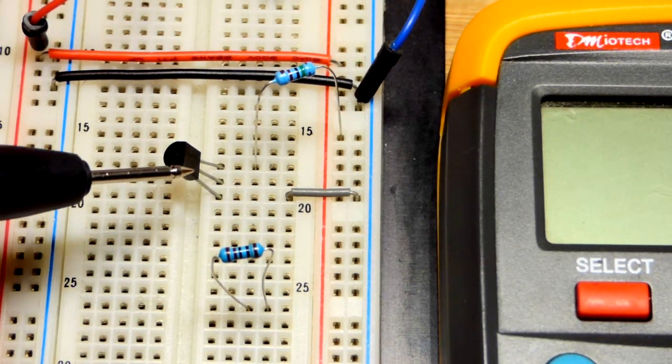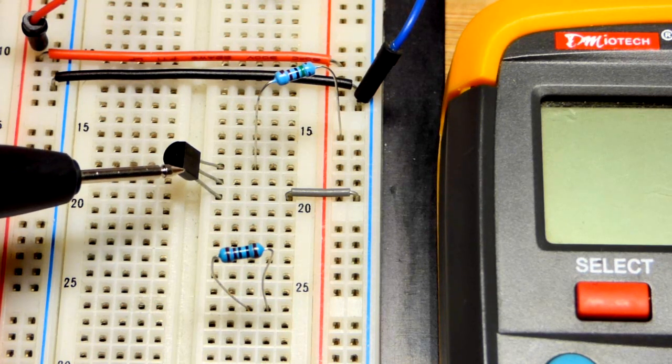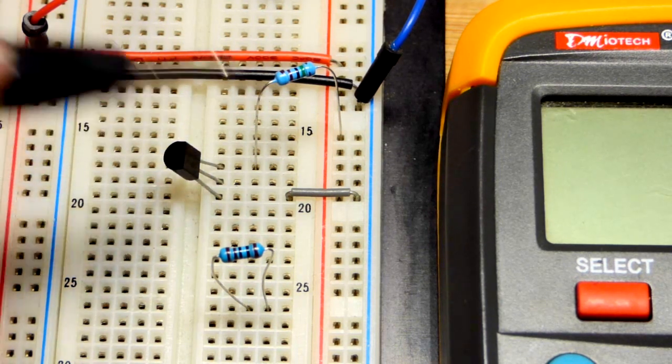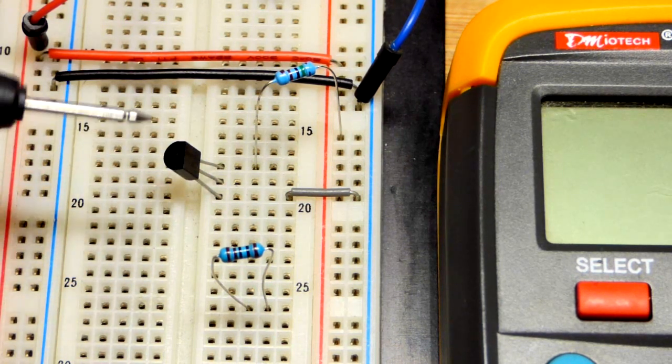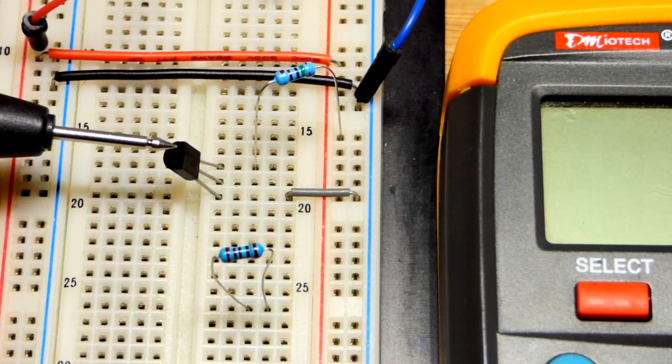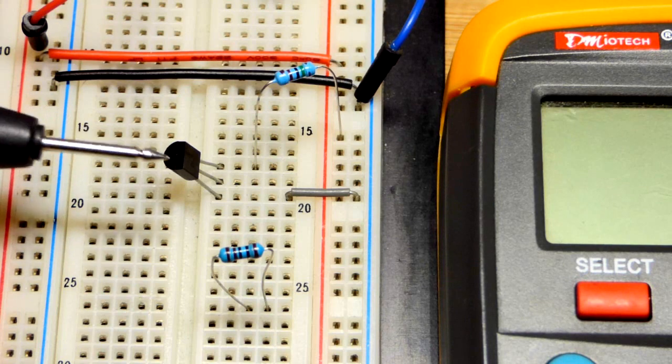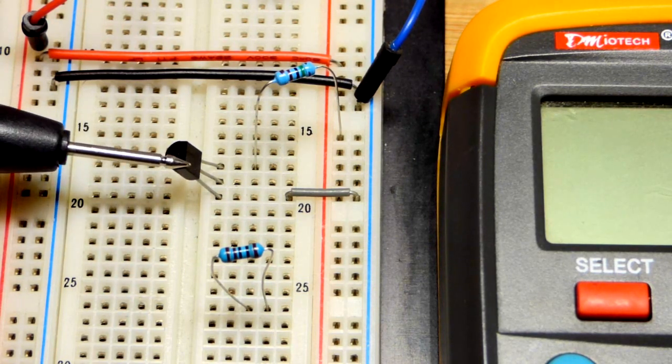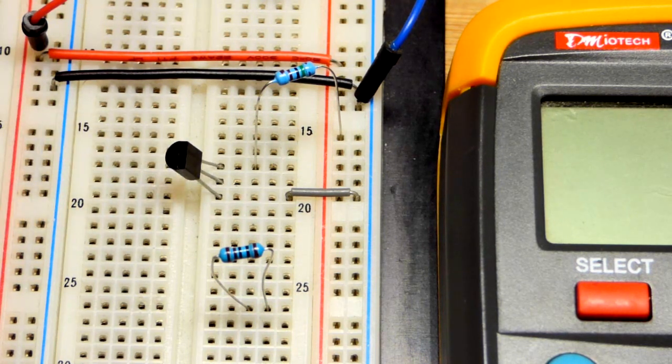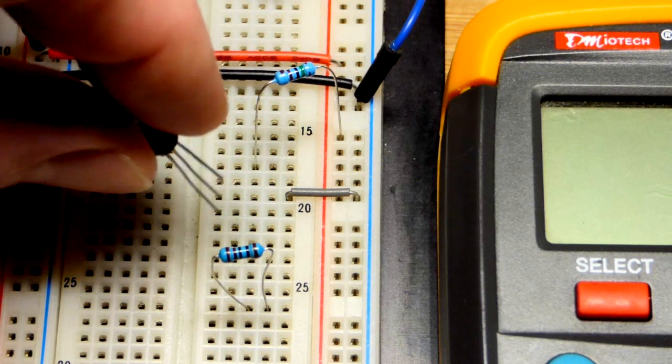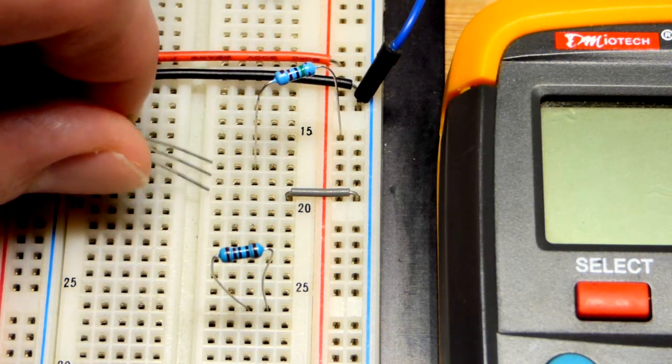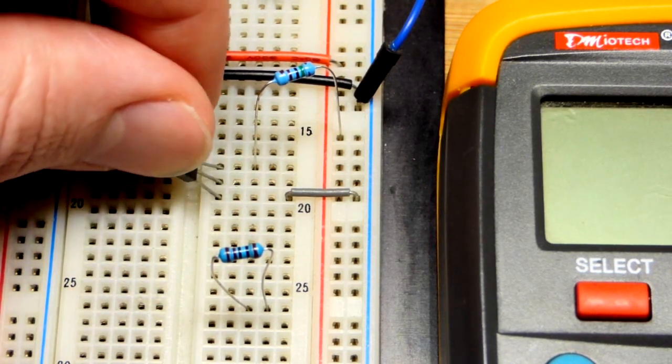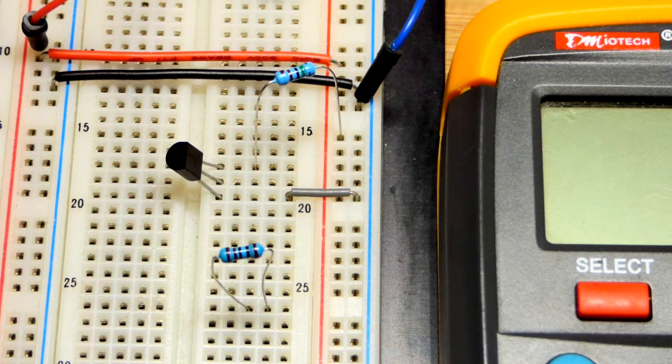In any case, we have here a 2N2222, an NPN type bipolar junction transistor. We got the emitter there, the base in the middle, and the collector on top. And if you have a transistor that starts with 2N and it's a bipolar junction transistor, whether PNP or NPN, all the ones I've come across have that same pin layout. So flat side there, this one is emitter base collector. Sometimes you might need to turn it around though for whatever reason for the circuit that you're using. So if the flat side is facing the other way, the pins are the other layout.